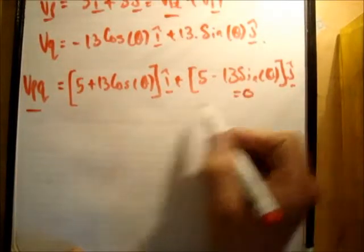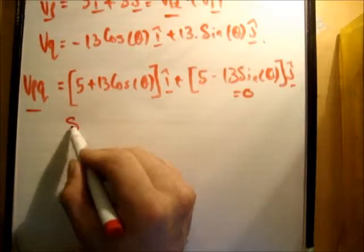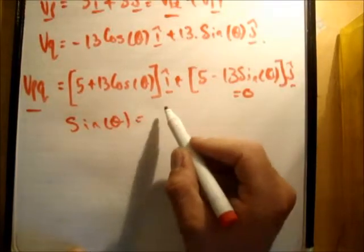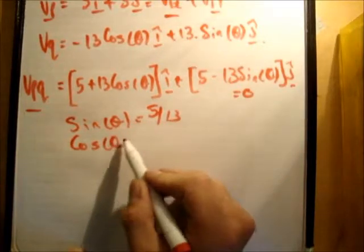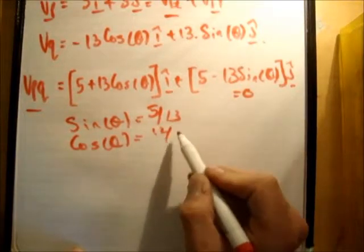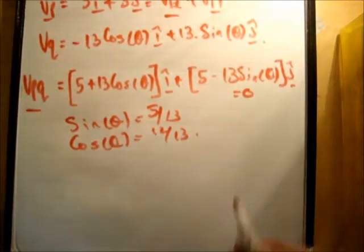So we can say this is equal to 0, and we can get that sine of theta is equal to 5 over 13. We can say cosine of theta is equal to 12 over 13. Just use a bit of Pythagoras as normal here.